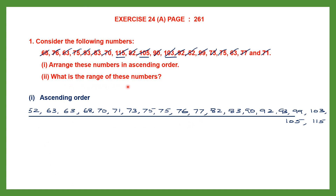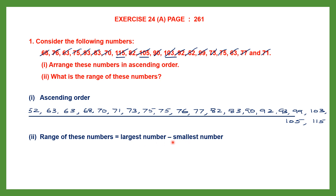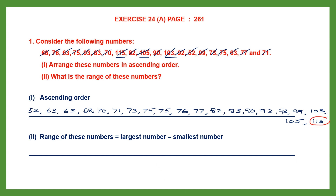The next question asks for the range of these numbers. To find the range, take the largest number and subtract the smallest number from it. The largest number is 115 and the smallest is 52. So 115 minus 52: 5 minus 2 is 3, 11 minus 5 is 6 — so the range is 63.